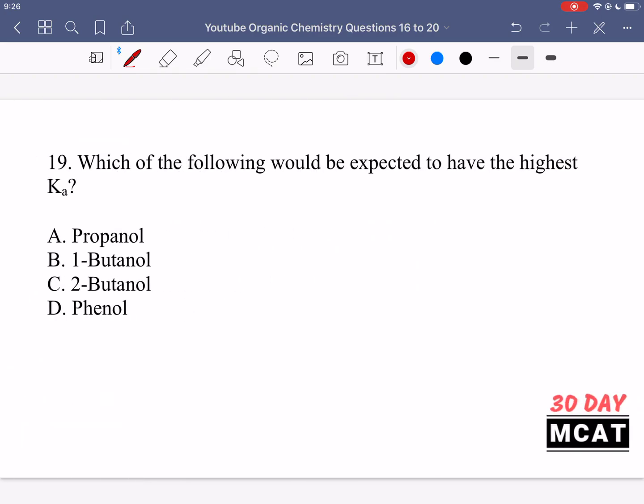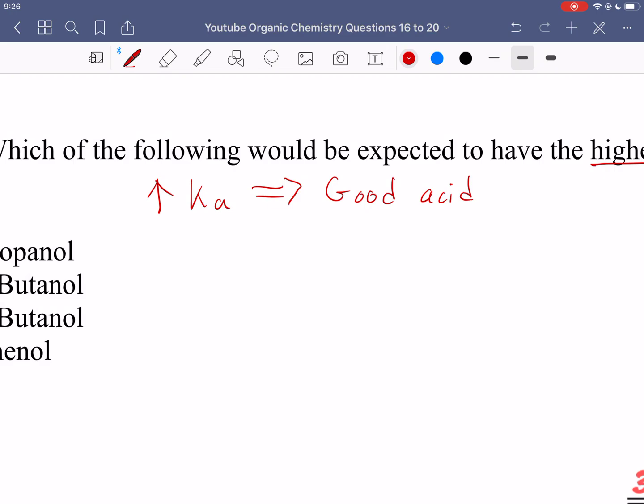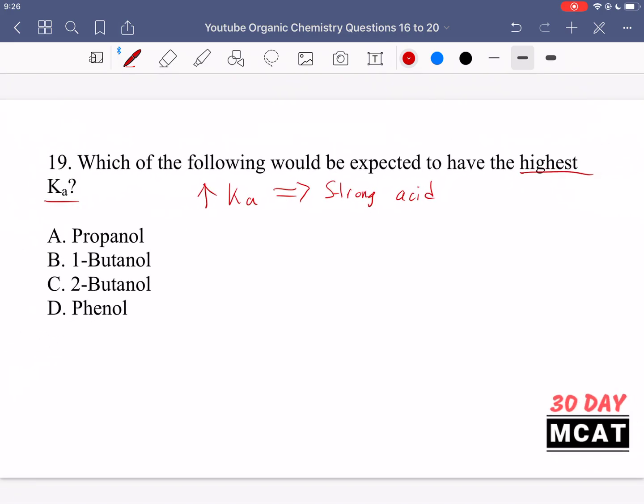In question 19, we're asked which of the following would be expected to have the highest Ka. So when we say that something has a high Ka, that means that we are saying it is a good acid, or a strong acid, that would probably be a better word. So we're saying it is a strong acid, and then having a high Ka also means that you have a low pKa. So those are two ways that you can think about it.